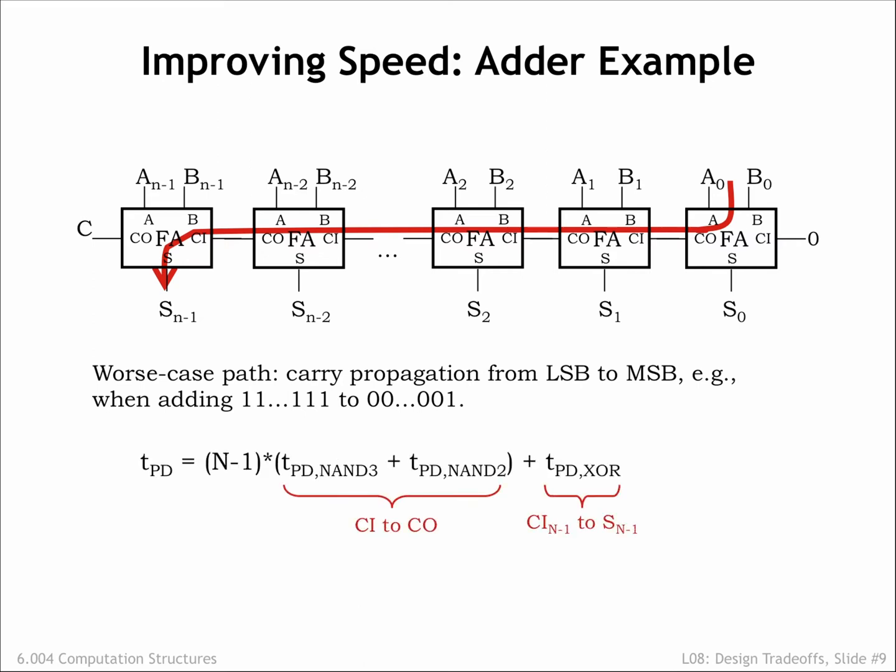The total propagation delay along this path is n minus 1 times the carry-in to carry-out delay of each full adder plus the delay to produce the final bit of the sum. How would the overall latency change if we doubled the size of the operands, in other words, made n twice as large?